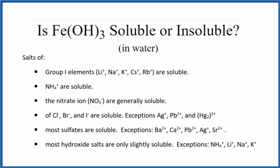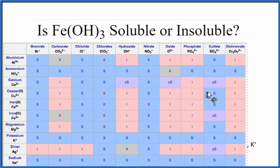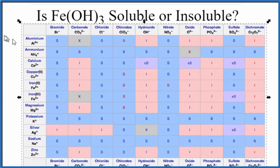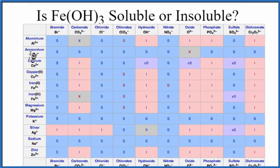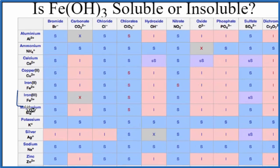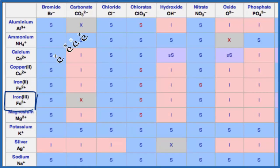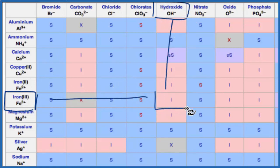We could also look at a solubility chart. So here's the solubility chart, and we're going to find iron 3. We go down, right here's iron 3, and then hydroxide, OH-, that's right there. So we'll go down, and we'll go over, and we see that I there. That I means that it's insoluble according to our solubility chart here.